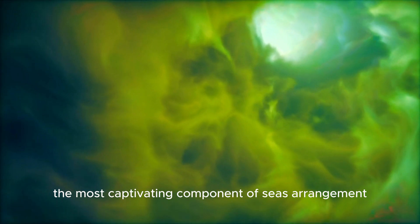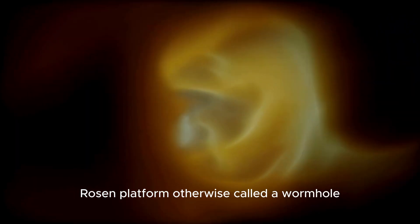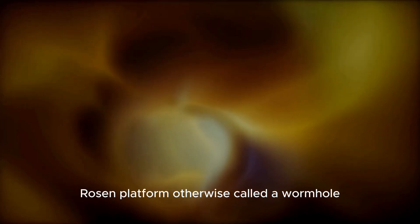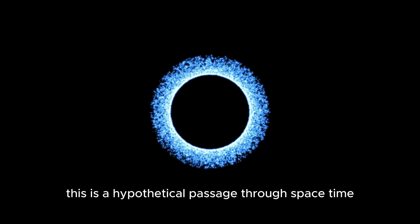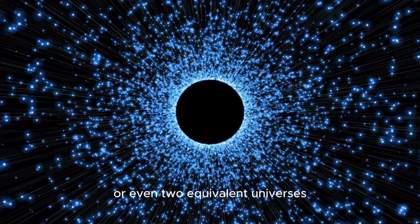However, the most captivating component of Kerr's arrangement was that it expected the presence of an Einstein-Rosen platform, otherwise called a wormhole. This is a hypothetical passage through space-time that partners two separate regions of the universe or even two equivalent universes.